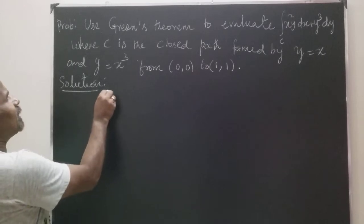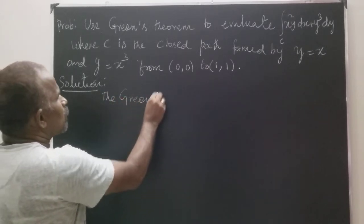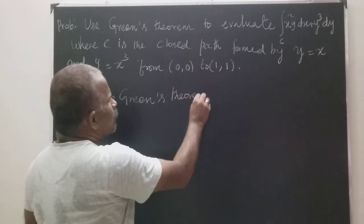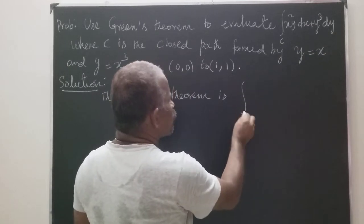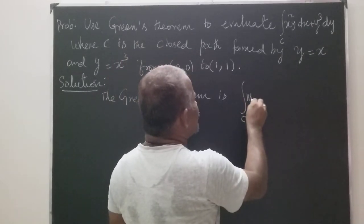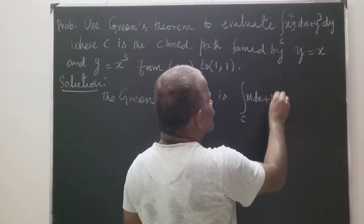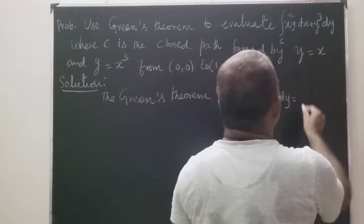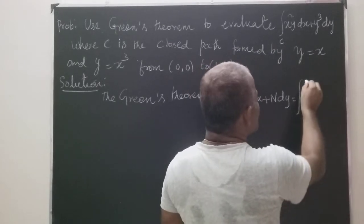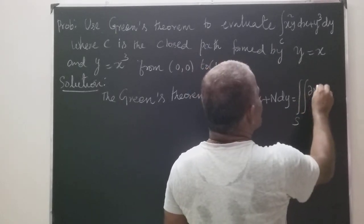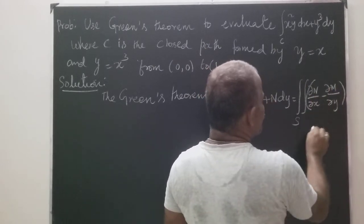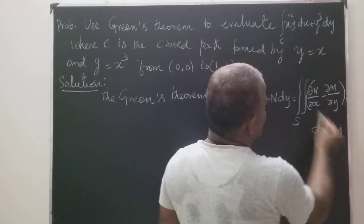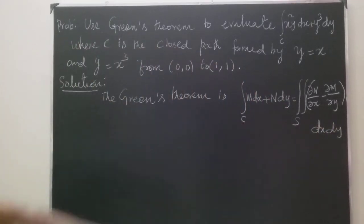Green's theorem states: the integral over c of M dx plus N dy equals the double integral over the region S of (∂N/∂x minus ∂M/∂y) dx dy. This is the statement of Green's theorem.